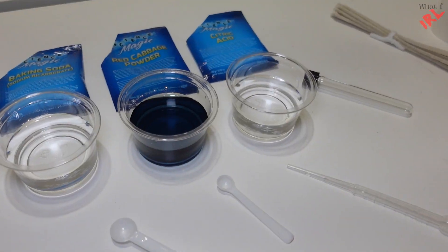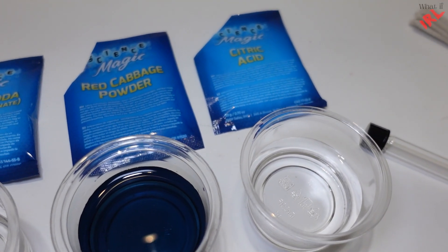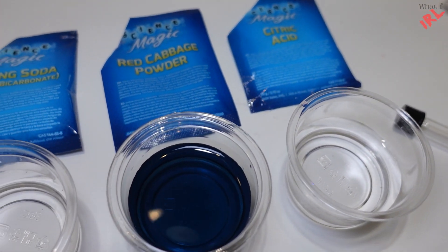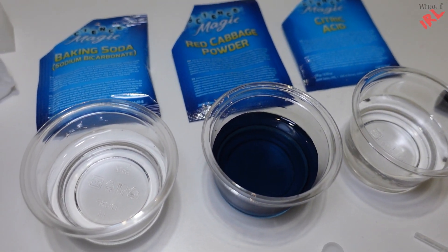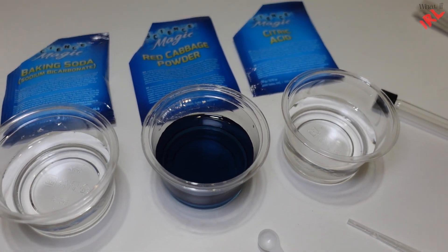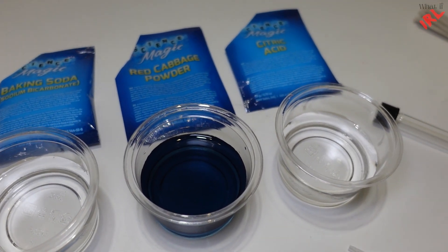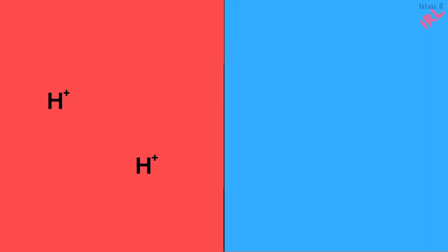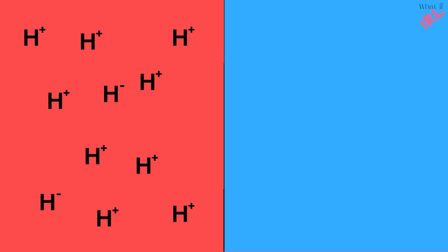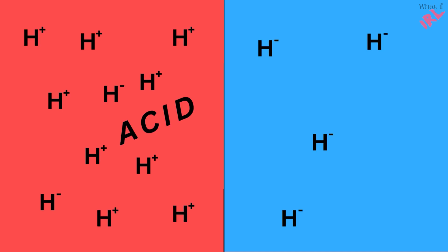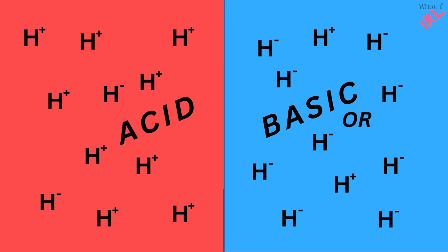Yes! Jonny, we saw what happened with acid and alkaline, right? But can you explain what is acid and what is alkaline? Yes! If there are more positively charged hydrogens, that is called acid. However, if there are more negatively charged hydrogens, that is called basic or alkaline.